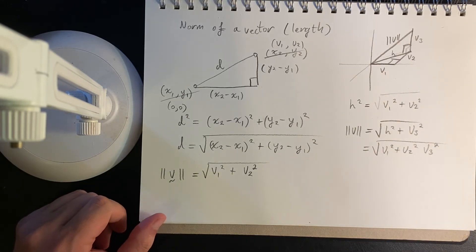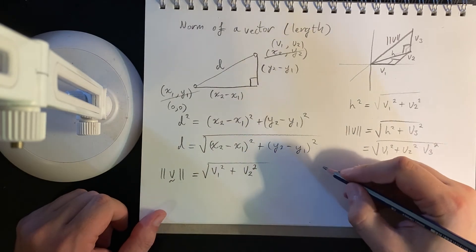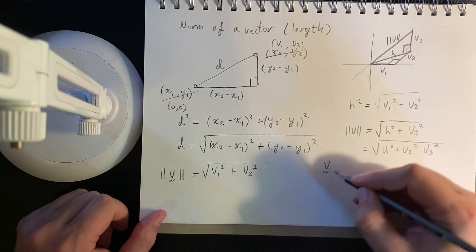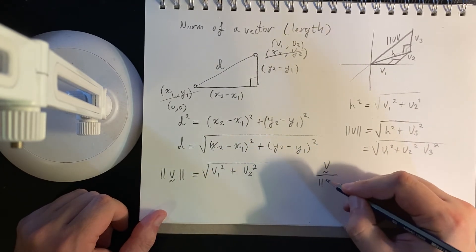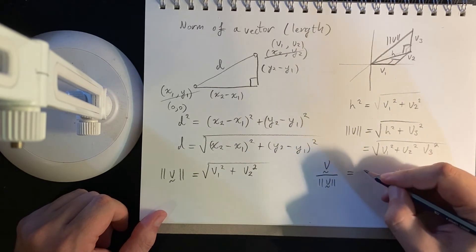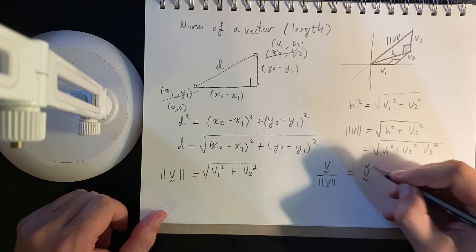But what I do want to look at is, this is super important. If we take a vector, and we divide it by its own norm, then this produces, we say, a unit vector.